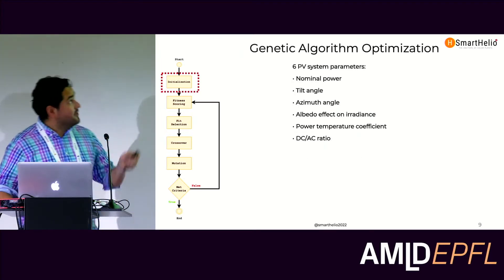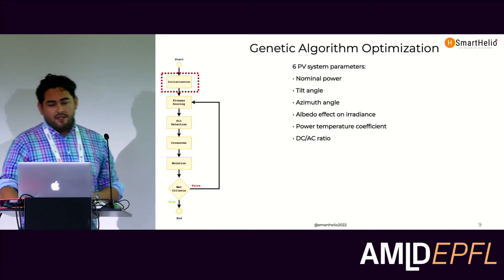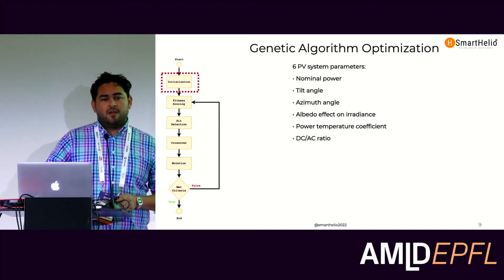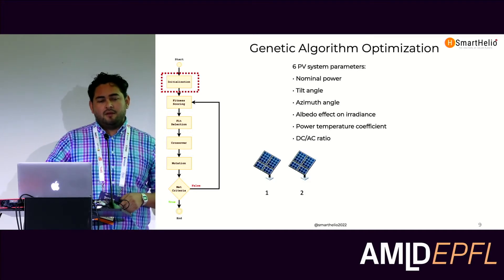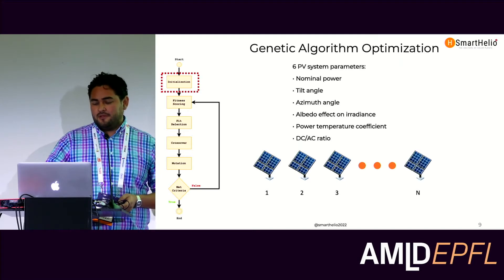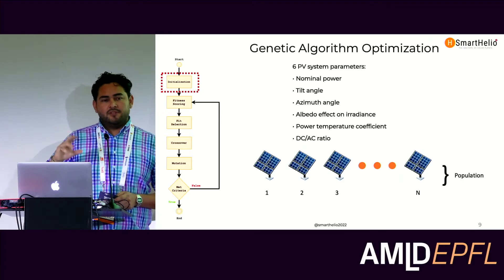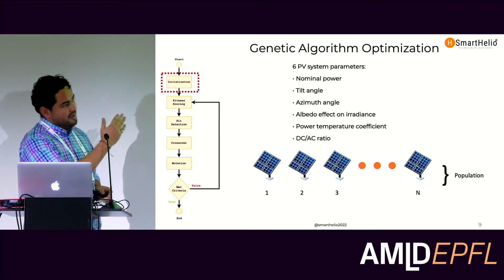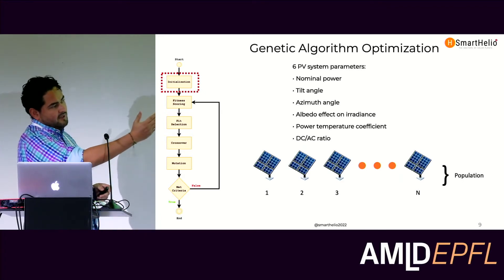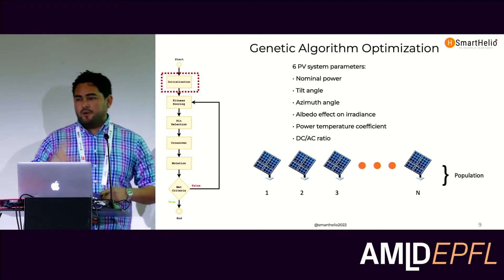Let's start with the initialization step. The initialization step is basically creating a population — we create many PV systems using different parameters for each one. We assume that all these systems have different characteristics and different parameter values.